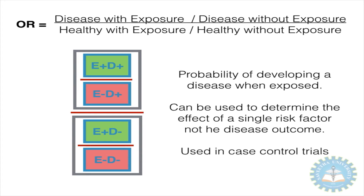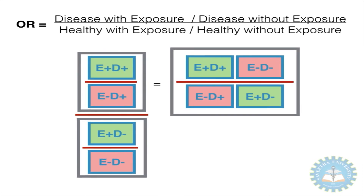The odds ratio is the ratio of disease with exposure divided by disease without exposure, over healthy with exposure divided by healthy without exposure. It is the probability of developing a disease when exposed, and can be used to determine the effect of a single risk factor on the disease outcome. It is used in case control trials and retrospective trials to determine the odds of developing a disease. When plotted out, the odds ratio is: diseased people with exposure divided by diseased people without exposure, divided by healthy people with exposure divided by healthy people without exposure.